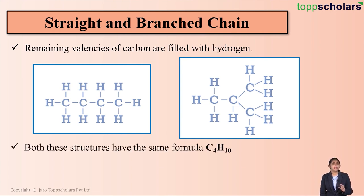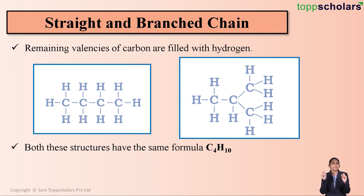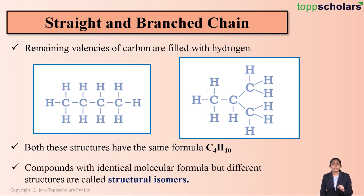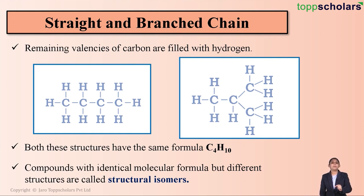Both these structures have the same formula — C4H10. But if you carefully look at the structures, these two compounds have different arrangements of carbon atoms. Such compounds which have identical molecular formula but different structure — that is, different arrangement of atoms — are called structural isomers. Both of these are examples of structural isomers: same molecular formula C4H10 but different structures with different arrangements of carbon atoms.